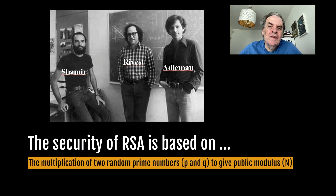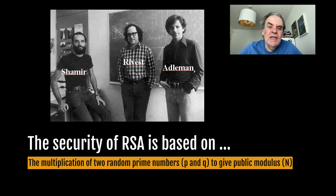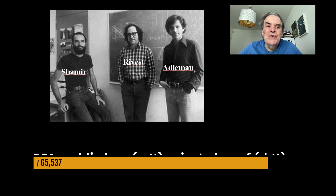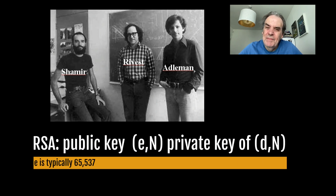In the security of RSA we base it on the multiplication of two random prime numbers P and Q and create a public modulus N. The difficulty of RSA is the difficulty in factorising this modulus. Once factorised it is easy to decrypt the ciphertext that has been encrypted using the related modulus.